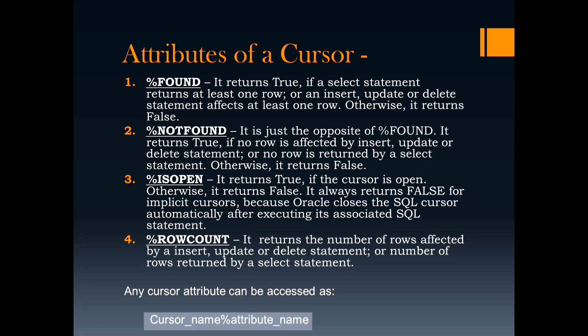Attributes of a cursor. There are mainly four attributes of a cursor. The first is %FOUND. It returns true if the SELECT statement returns at least one row, or at least one row is affected by an INSERT, UPDATE, or DELETE statement. Otherwise, it returns false.